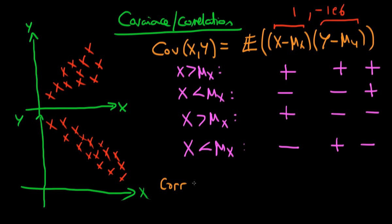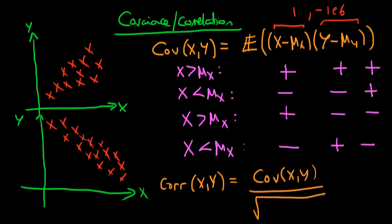The way we make it unitless is by taking something which we call the correlation between X and Y. This is defined as the covariance between X and Y divided by the square root of the variance of X times the variance of Y. The top and the bottom both have the same units, because the variance of X is X squared and the variance of Y is Y squared, but when we take the square root it becomes X times Y — the same units as the top — making the whole expression unitless.